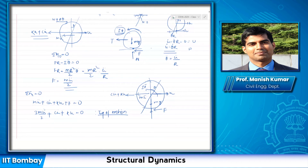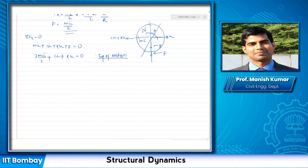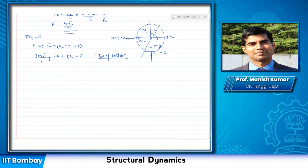A student asks: what if friction is not considered? The instructor responds: how would the disk rotate without friction? What force would make it rotate? Without a tangential friction force at the contact, there is no moment to drive rotation, so friction is essential.